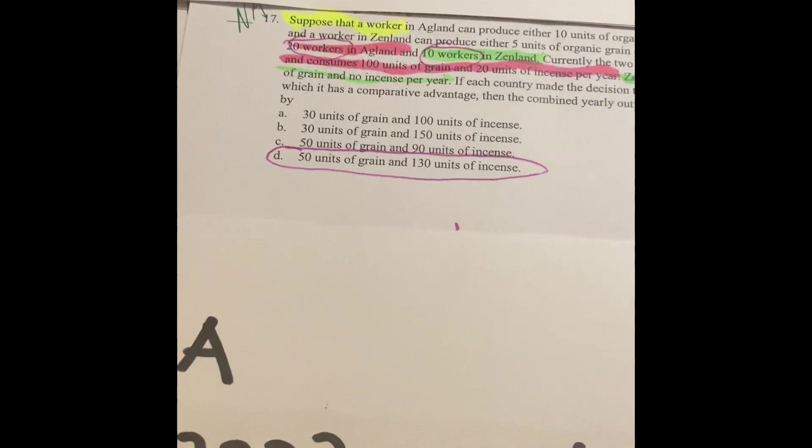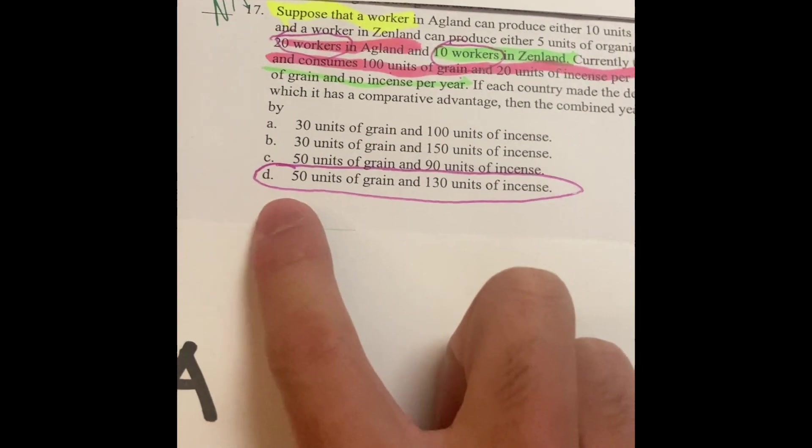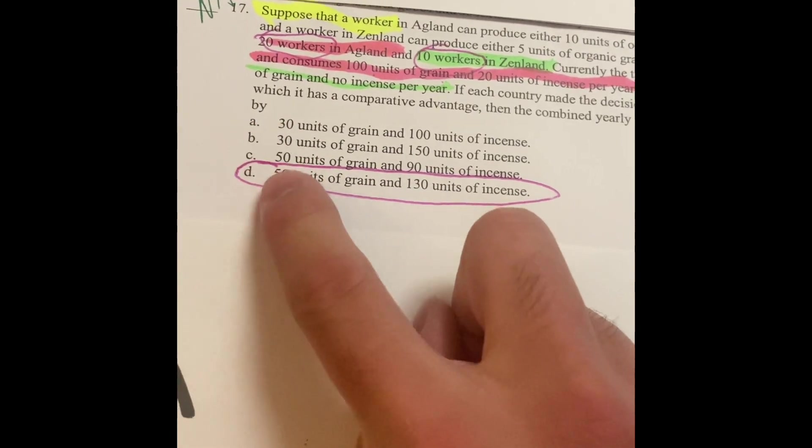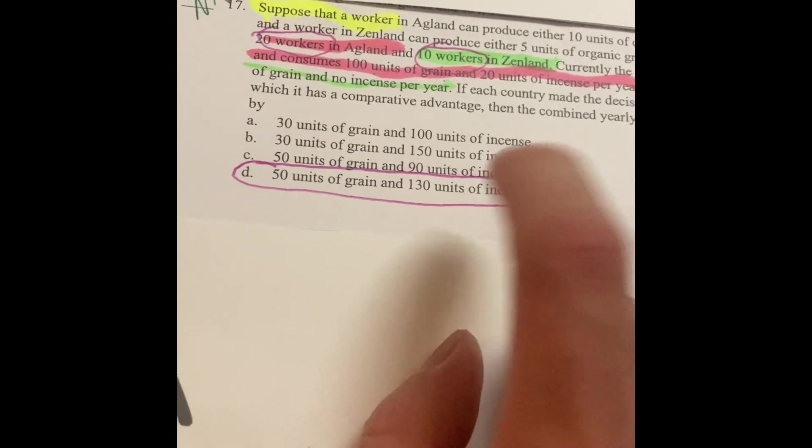Let's see. Yep, the answer is D. They're going to have an increase in 50 units of grain and 130 units of incense.